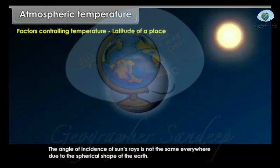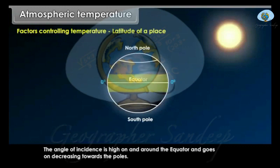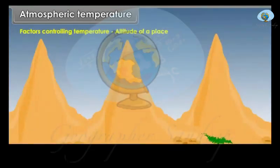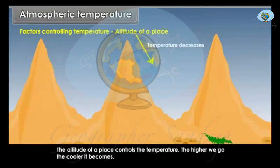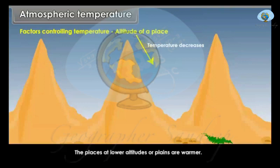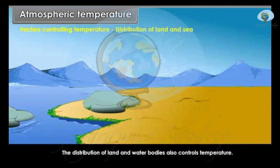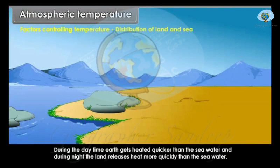Latitude of a place: The angle of incidence of sun's rays is not the same everywhere due to the spherical shape of the earth. The angle of incidence is high on and around the equator and goes on decreasing towards the poles. Altitude of a place: The altitude of a place controls the temperature. The higher we go, the cooler it becomes, because the atmosphere is heated indirectly by the heat of the earth — that is, terrestrial radiation. Places at lower altitudes or planes are warmer. Distribution of Land and Sea: The distribution of land and water bodies also controls temperature. During the daytime, earth gets heated quicker than the sea water, and during night, the land releases heat more quickly than the sea water.